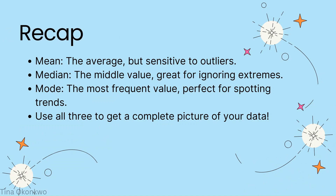To wrap it up, here's a recap: the mean gives you the overall average but can be affected by outliers. The median shows you the middle value and is great for ignoring extreme cases. The mode highlights what happens most often and helps you spot patterns. By using these three measures, you get a clearer picture of your data and can make smarter decisions — whether it's improving delivery times, managing customer expectations, or solving problems.